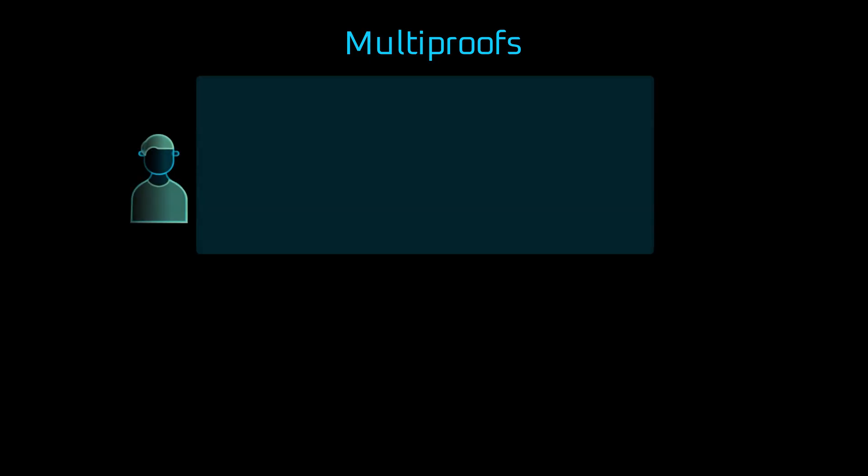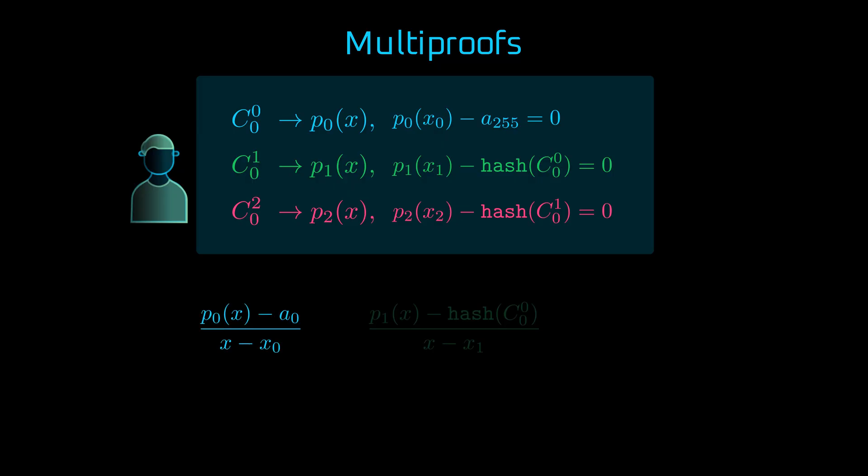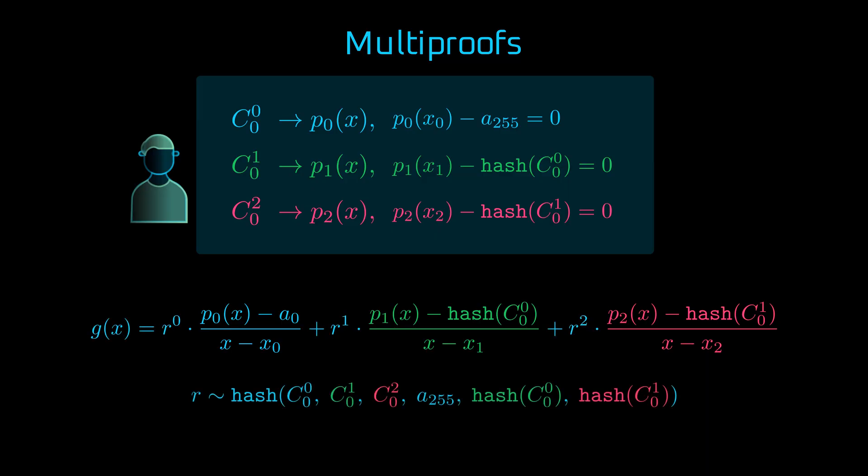And now, let's get back to our multiproofs. For each polynomial in our verkle tree, we will construct the quotient corresponding to respective opening and we will sum those quotients. Additionally, we multiply quotients in the sum by random factor R. This is how a random linear combination of quotients is created. A source of randomness for R is a hash of all of our inputs, commitments and openings. This way, we get a new polynomial G of X, which aggregates our inputs.